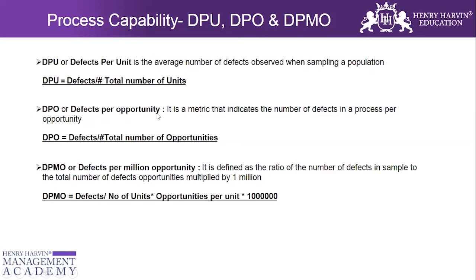DPO, or defects per opportunity, is a metric indicating the number of defects in a process per opportunity. The formula for DPO is defects divided by total number of opportunities, because one unit can have multiple opportunities. DPMO, defects per million opportunities, is the ratio of defects in a sample to total defect opportunities multiplied by one million. The formula is: defects divided by (total units × opportunities per unit) × 1,000,000.